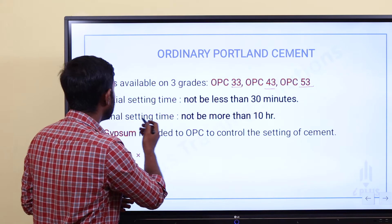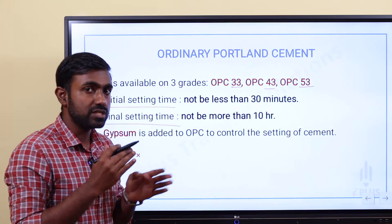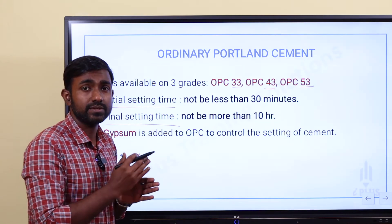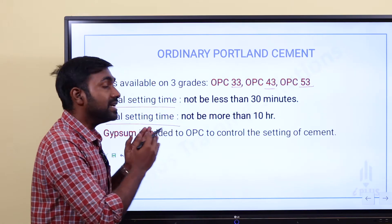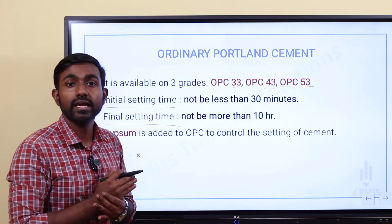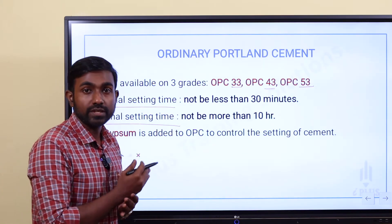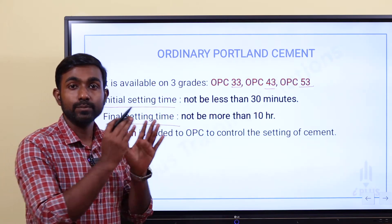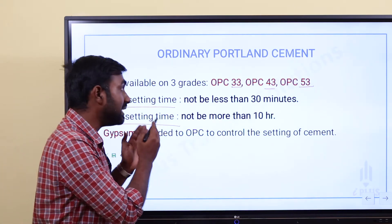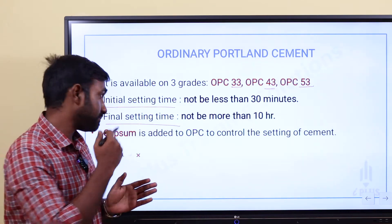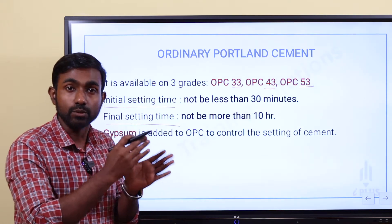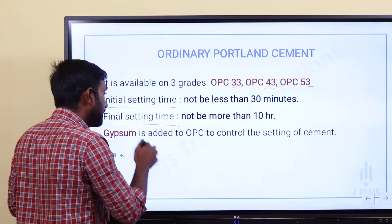We are discussing initial setting time and final setting time. Gypsum is added in cement manufacturing for controlling the setting time. We have to add 3 to 4 percent gypsum. So to summarize: OPC has three categories — 33, 43, 53. Initial setting time is not less than 30 minutes, final setting time is not more than 10 hours, and 3 to 4% gypsum controls the setting time of cement.